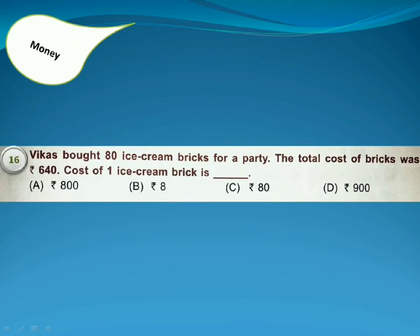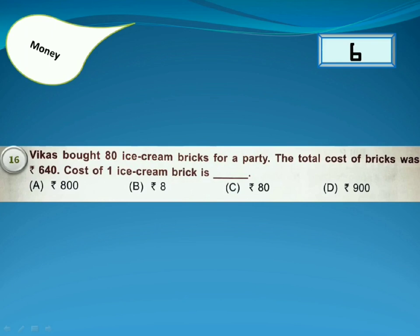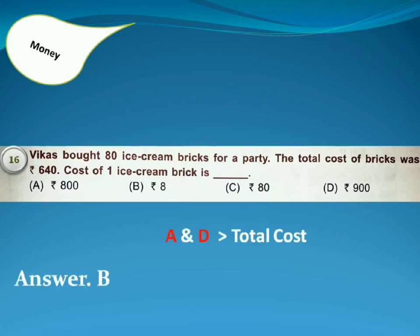80 ice cream bricks were bought for a party. The total cost of the bricks was 640 rupees. What is the cost of one ice cream brick? Answer is Option B, because Options A and D are greater than the total cost, so both are wrong. 8 into 80 is equal to 640, so Option B is correct.